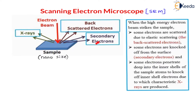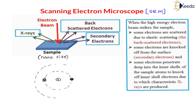Then there are secondary electrons. Some electrons are knocked off from the surface — these are called secondary electrons. Now in this sample there are some atoms, and these nanoparticles are made with the help of atoms. Considering the atomic model, there is a nucleus at the center and around this nucleus electrons are revolving — the K orbit has two electrons, the L orbit has eight electrons, and so on through K, L, M, N orbits, which you have already studied in chemistry.